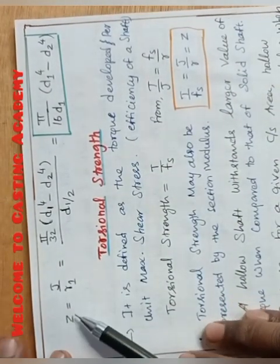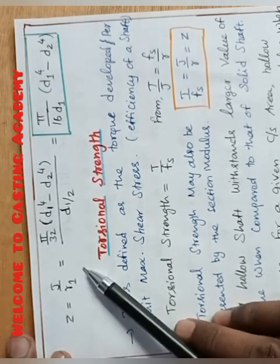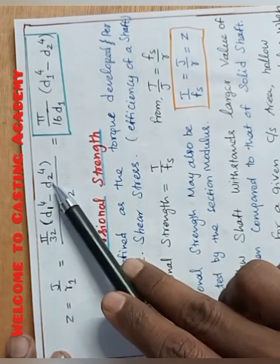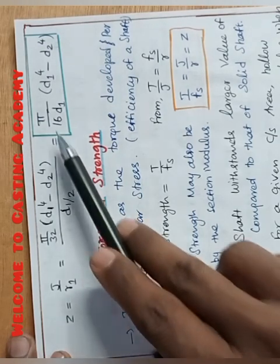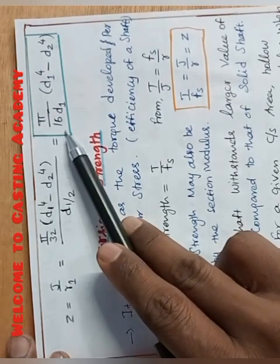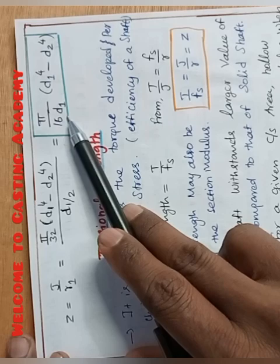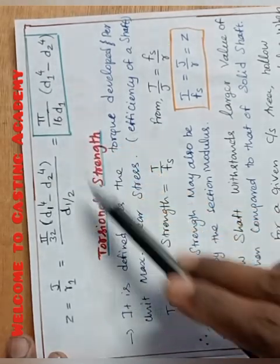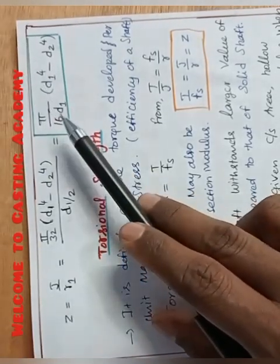So Zp equals polar modulus J divided by R1. That is equal to pi by 32 into d1 power 4 minus d2 power 4 divided by d1 by 2. Finally we got pi divided by 16 into d1 into d1 power 4 minus d2 power 4. This is the case of hollow circular shafts.